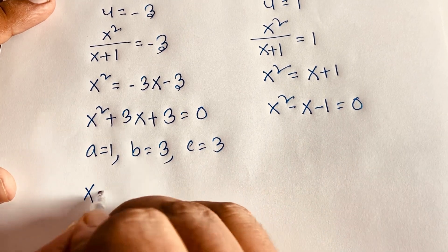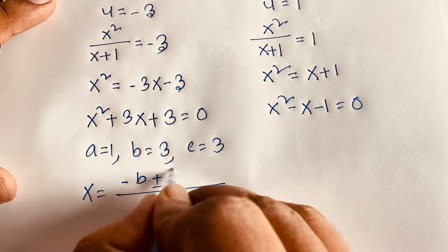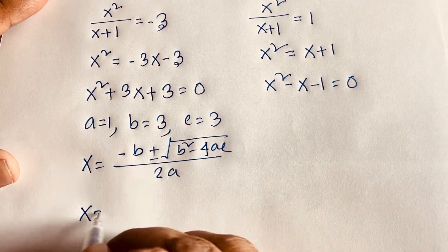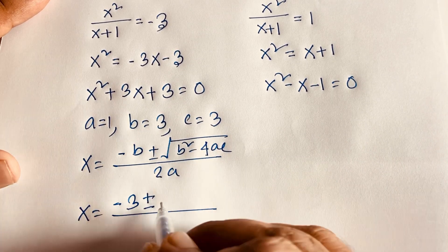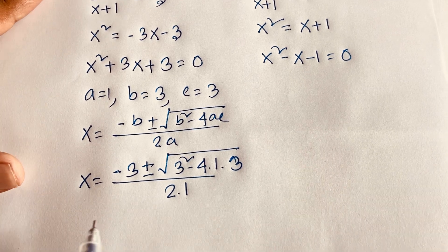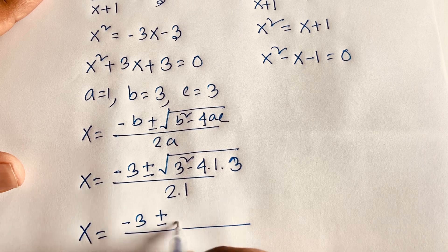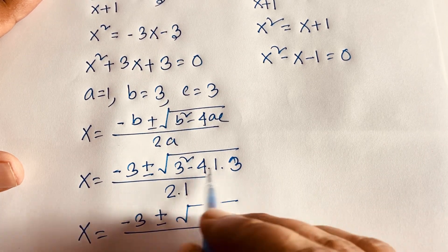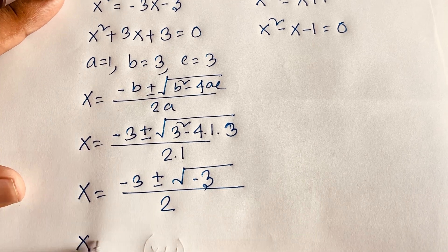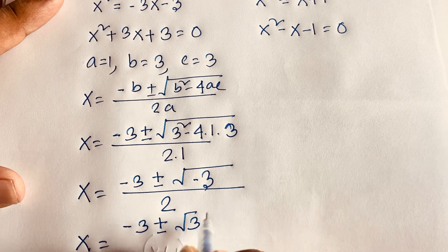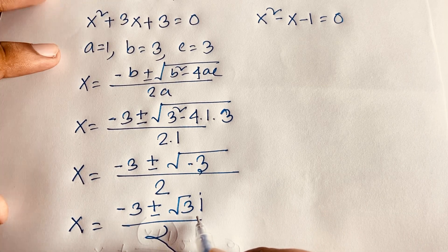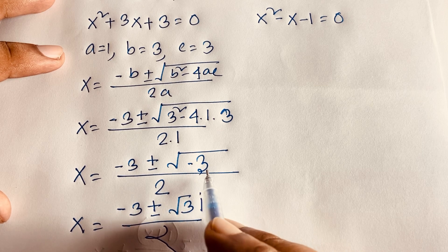Applying the quadratic formula x = (-b ± √(b²-4ac)) / 2a to Case 1 with a=1, b=3, c=3: x = (-3 ± √(9 - 12)) / 2 = (-3 ± √(-3)) / 2 = (-3 ± i√3) / 2. These are complex roots, since √(-3) = i√3.